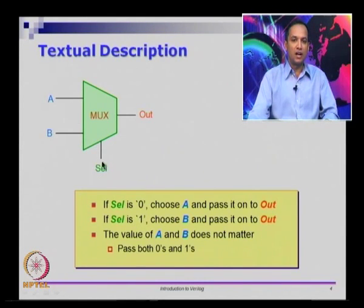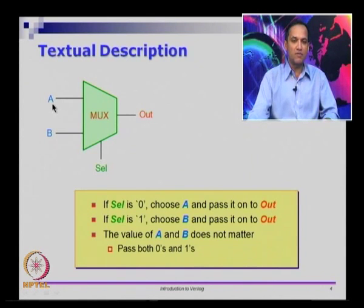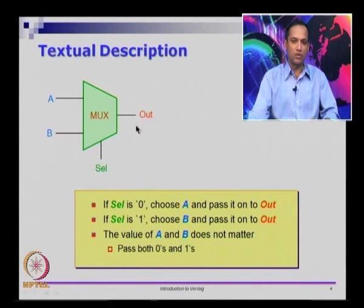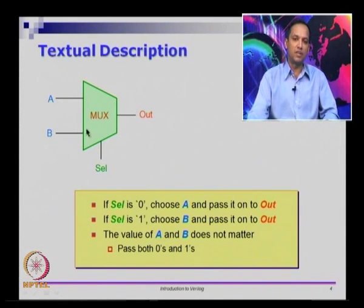At this point, the description says if select is 0, pass a to output. We do not care whether a is 0 or 1 — we want to pass whatever is the current value of a to the output. Similarly, whenever select is 1, it does not matter whether b is 0 or 1; we want that value passed to the output. This means the multiplexer passes both 0s and 1s. This is an English text description; the schematic or symbol is another description of the same problem.